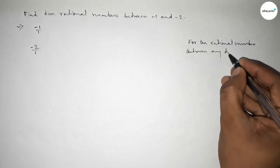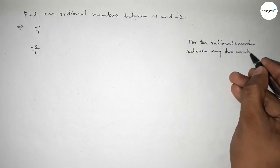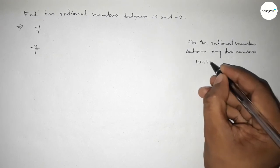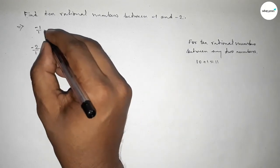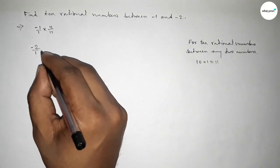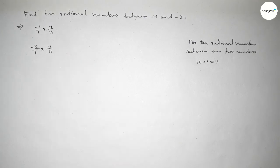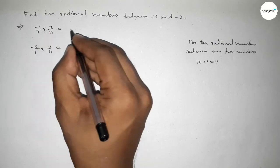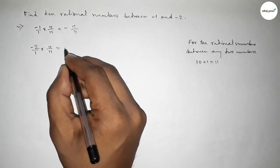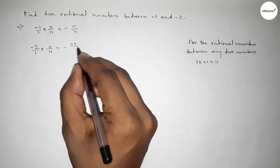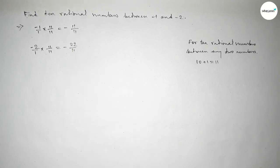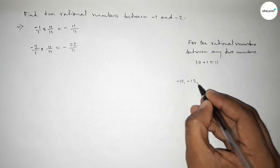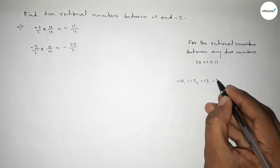The method is: we have to multiply both numbers by 10 plus 1, which equals 11. So here we multiply by 11 over 11 and similarly by 11 over 11. This gives us minus 11 over 11 and minus 22 over 11.